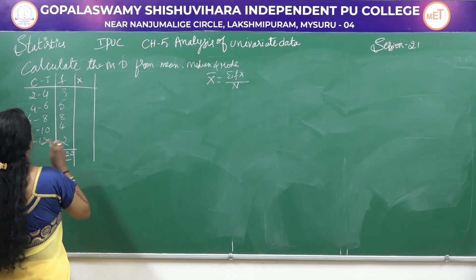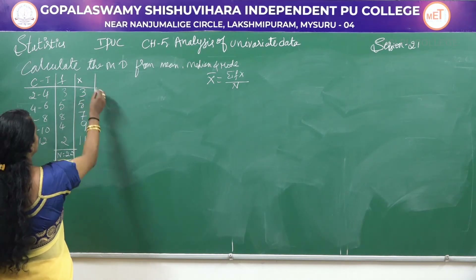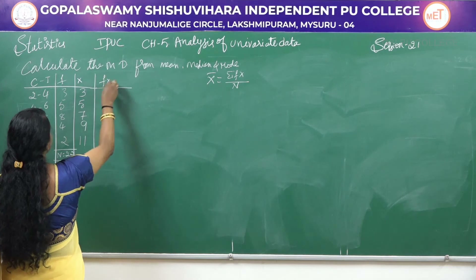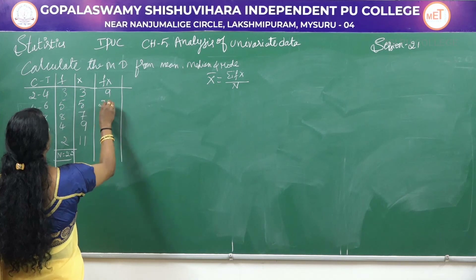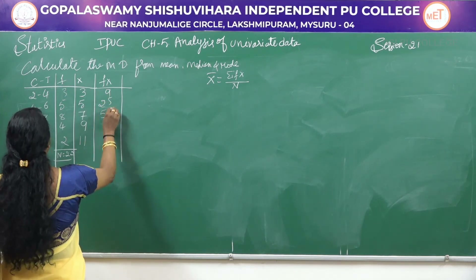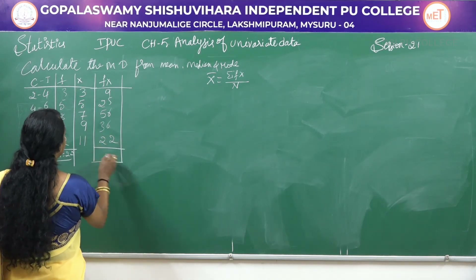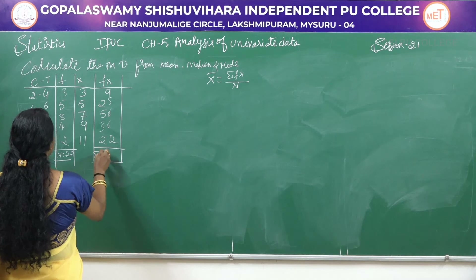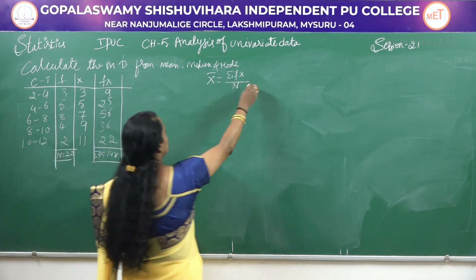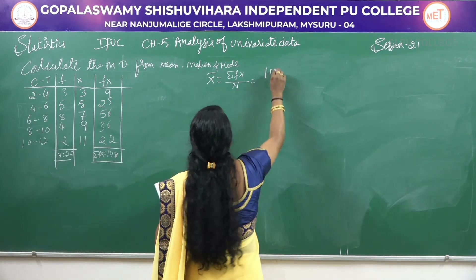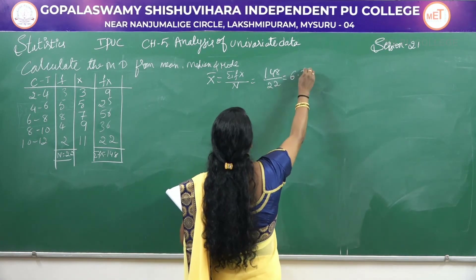So x is the midpoint. The midpoints are 3, 5, 7, 9, and 11. Next find out fx: 3×3=9, 5×5=25, 8×7=56, 4×9=36, 2×11=22. The summation of fx is 148. Next find out mean value: x̄ = 148 / 22, so x̄ = 6.72.